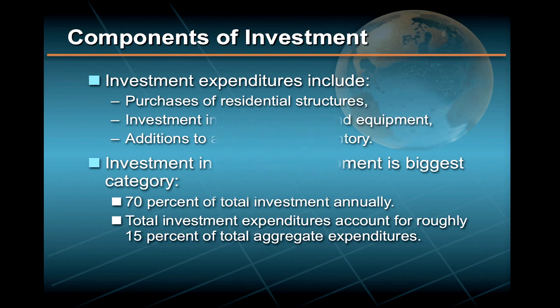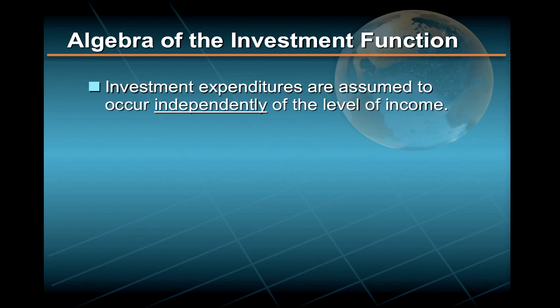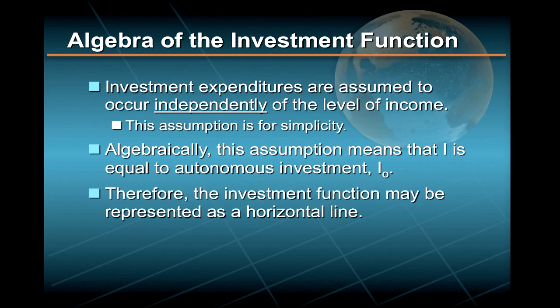In the Keynesian model, investment expenditures are assumed to occur independently of the level of income. Algebraically, this means that investment I is simply equal to autonomous investment I-naught.